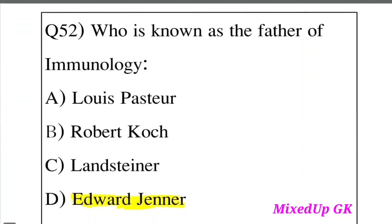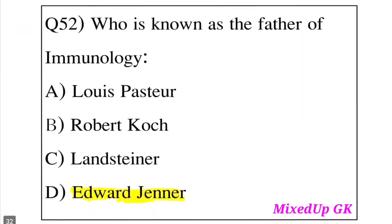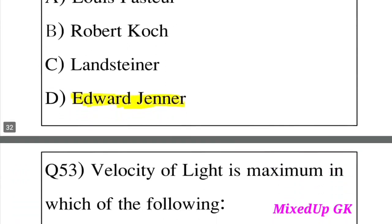Question 52: Who is known as the father of immunology? Option A: Louis Pasteur. Option B: Robert Koch. Option C: Lancer Denner. Option D: Edward Jenner. The answer is Option D, Edward Jenner. Edward Jenner is known as the father of immunology.